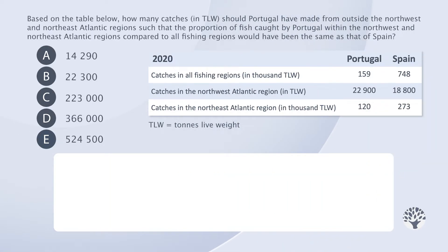Let's start by carefully analysing the question. The question reveals two things – the concept we need to use and the data we need to look at. Based on the table below, how many catches in TLW should Portugal have made from outside the North-West and North-East Atlantic regions, such that the proportion of fish caught by Portugal within the North-West and North-East Atlantic regions compared to all fishing regions would have been the same as that of Spain.